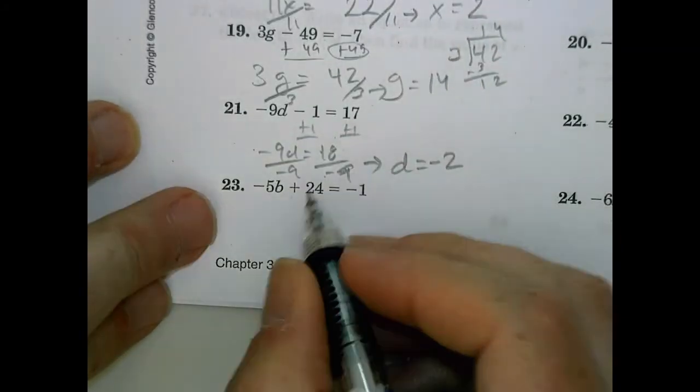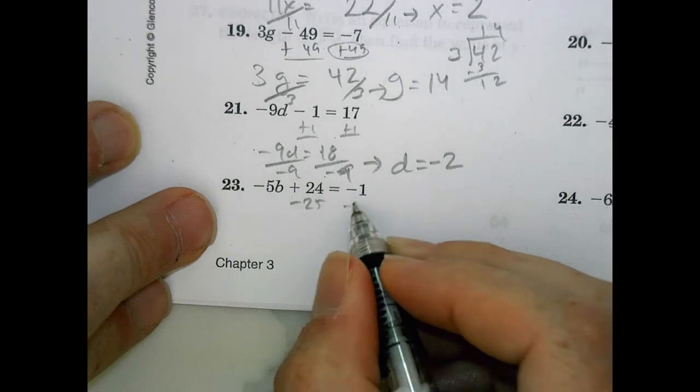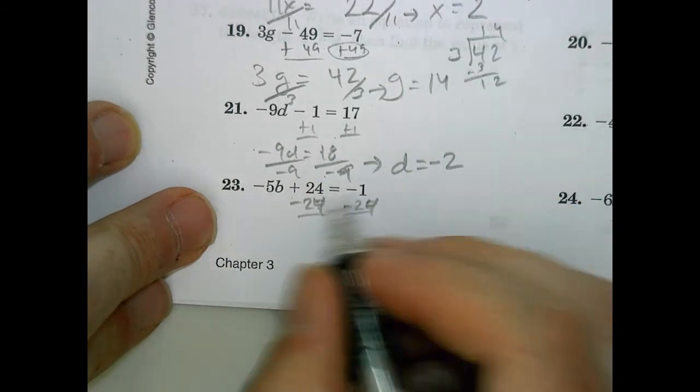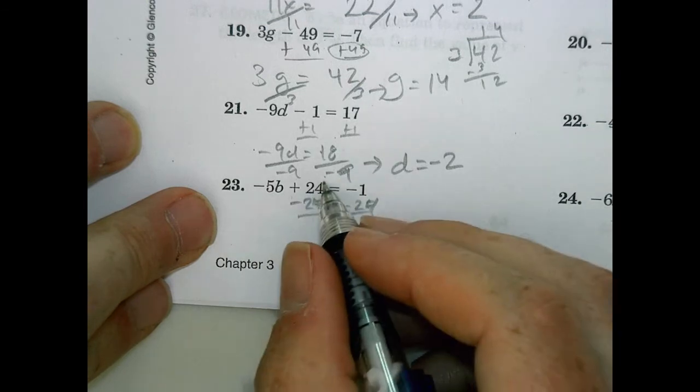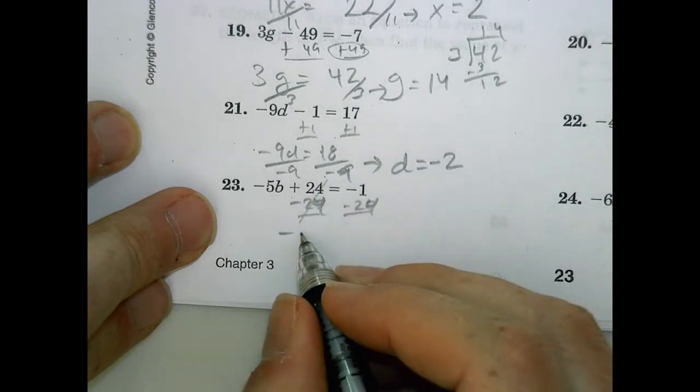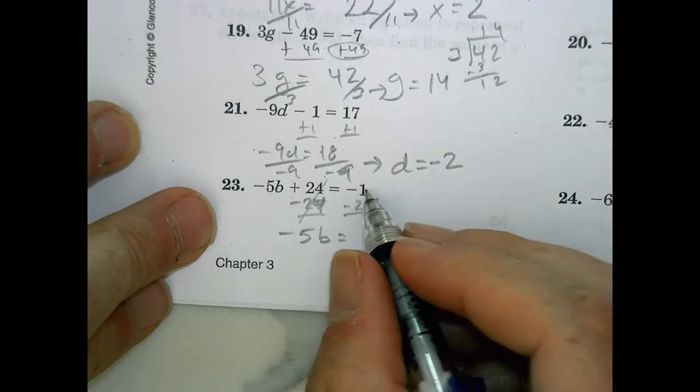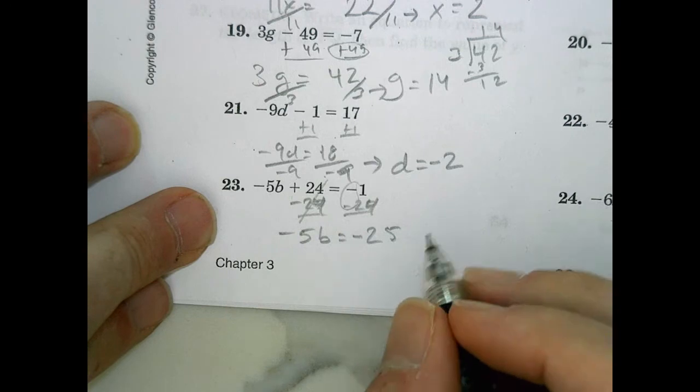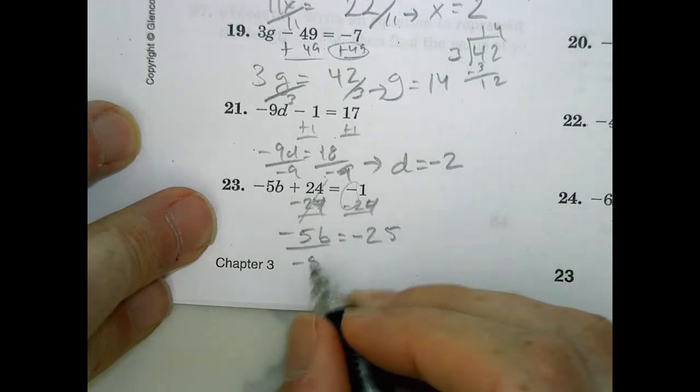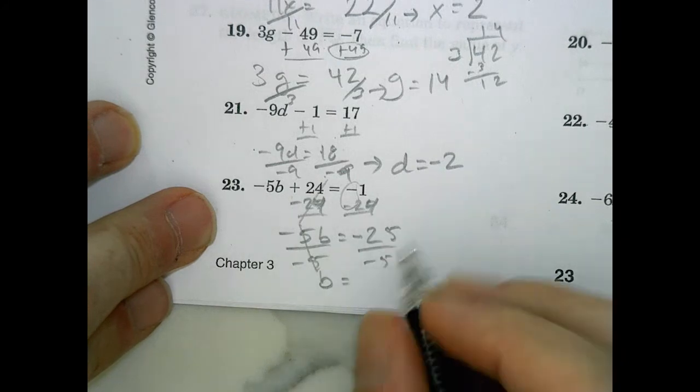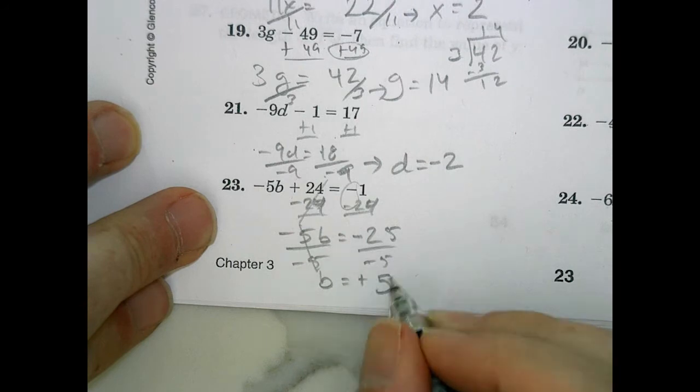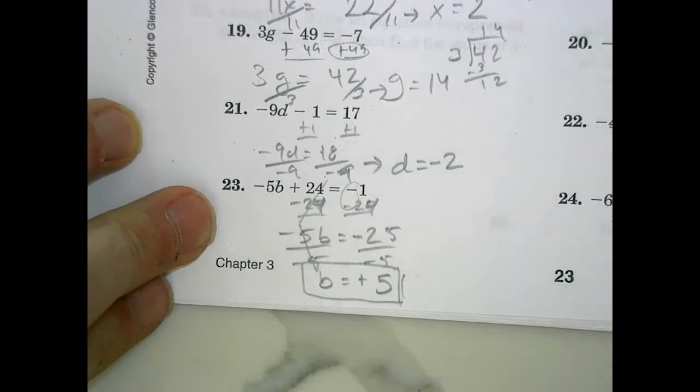And finally, number 23. We're going to subtract 24, subtract 24. That is reduced to nothing. And we have negative 5b equals, the signs are the same. We find the sum and keep the sign the same. Negative 25. Divide by negative 5, divide by negative 5. Reduces down to b. 25 divided by 5 is 5. And the signs are the same, so we're going to make that a positive solution. So b equals just plain old 5.